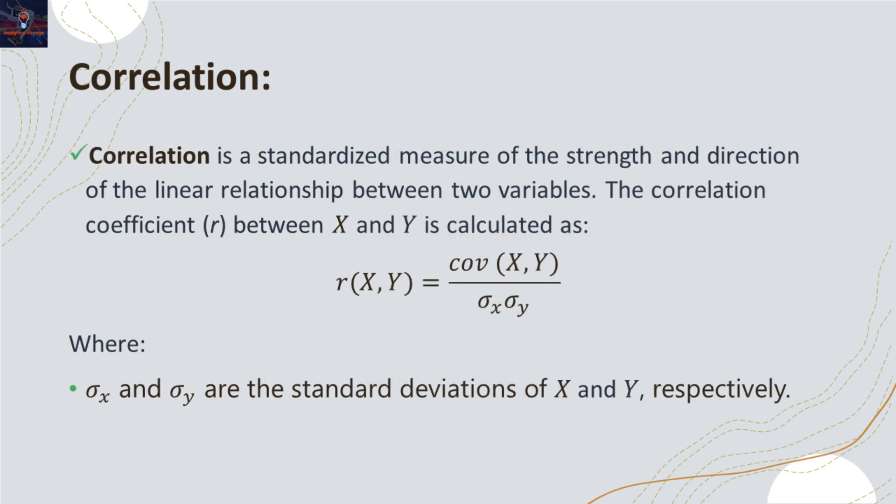Correlation is a statistical measure that quantifies the extent to which two or more variables change in relation to each other. Similar to covariance, it helps in understanding the direction of the linear relationship between two variables. It also measures the strength of this relationship.